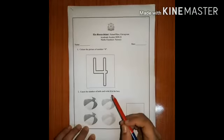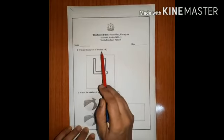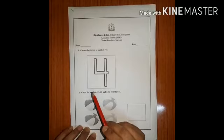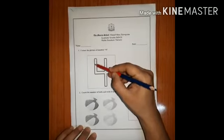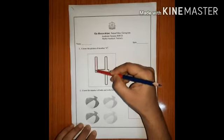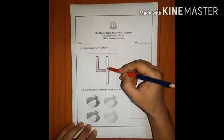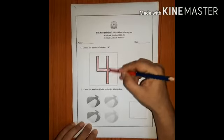Let's do the fun sheet. Here the question is, color the picture of number 4. So kids, this is number 4. We have to color it. Let's start coloring. You have to color it like this.